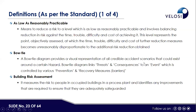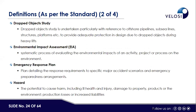A bowtie diagram provides a visual representation of all credible accidental scenarios around a certain hazard. It links threats and consequences to an event controlled by various preventive, mitigating, and recovery measures or barriers. Building Risk Assessment (BRA) measures the risk to people in occupied buildings in a process plant and identifies improvements required to ensure they are adequately safeguarded. QRA is a quantitative assessment of the plant, but it also covers admin and surrounding buildings where people could be present.